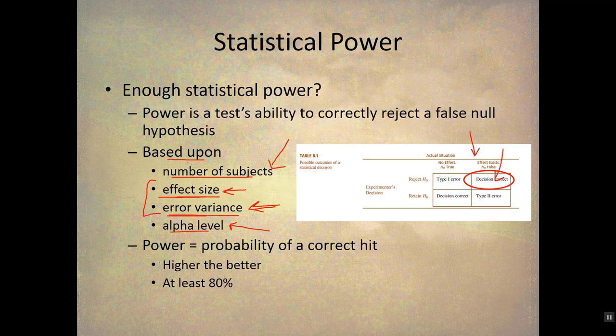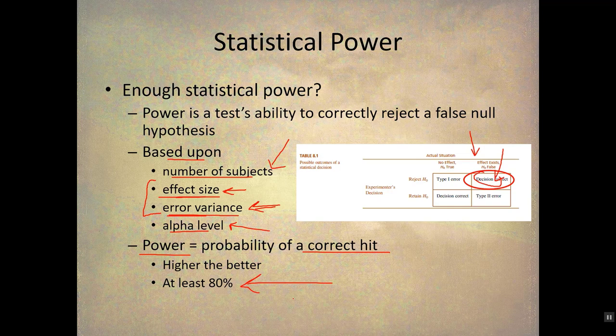All of these allow us to calculate power, which is the probability of a correct hit. Cohen says we should have at least 80% power, meaning that if the null hypothesis is false, we have an 80% chance of detecting it and rejecting the null hypothesis. The higher, the better. Cohen is saying 80% is the lowest acceptable level for a researcher who doesn't want to waste time doing research with a weak, powerless statistical test.